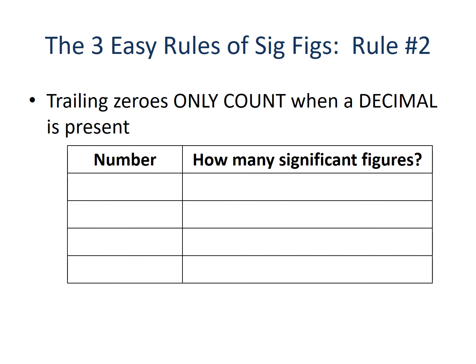Now for rule number two: trailing zeros only count when a decimal is present. The presence or absence of a decimal will be the deciding factor. Our first example is 140. Does anybody see a decimal? Without a decimal, the zero at the end doesn't count towards our significant figures, which means our significant digits are the one and the four — two significant figures.